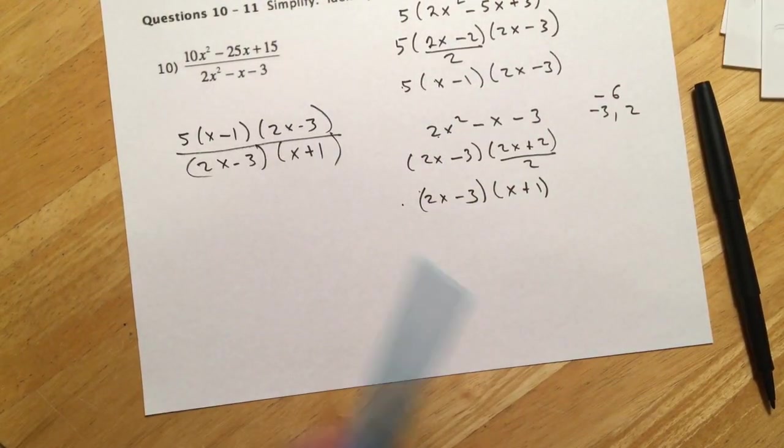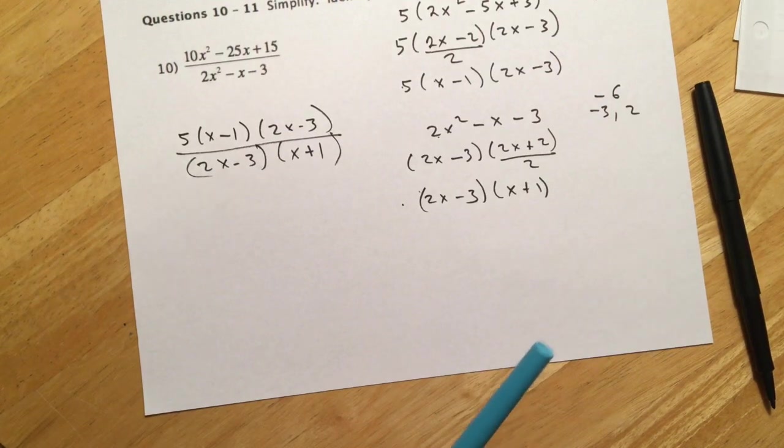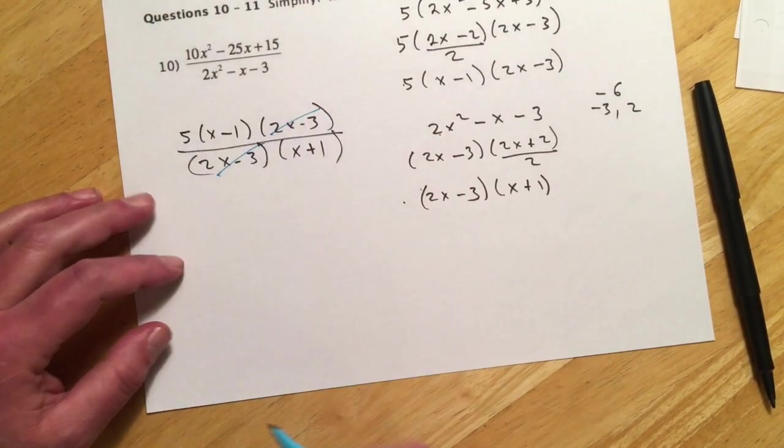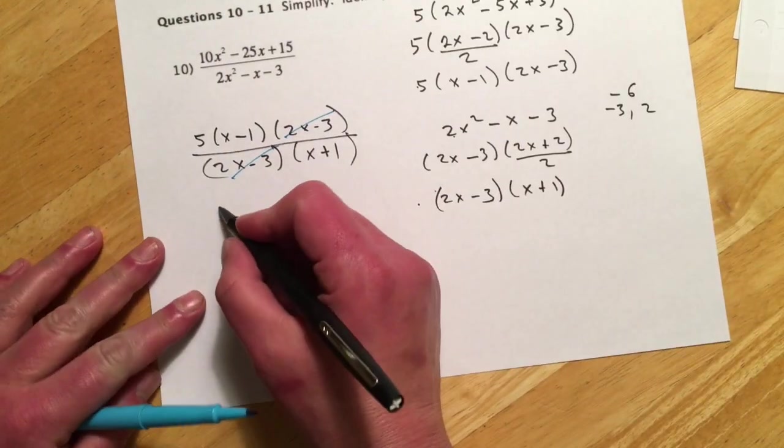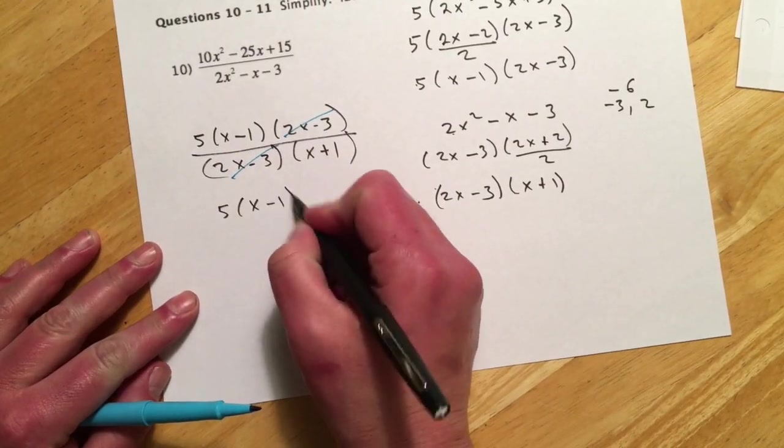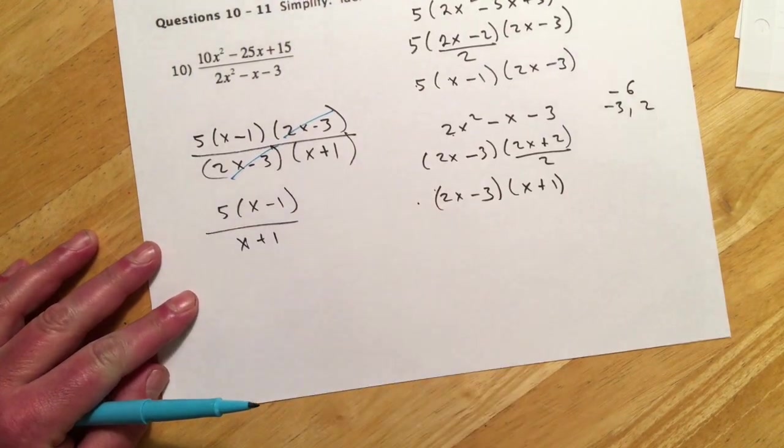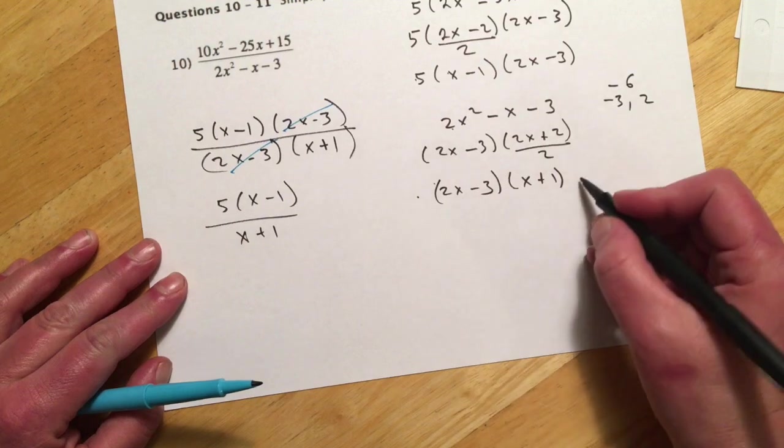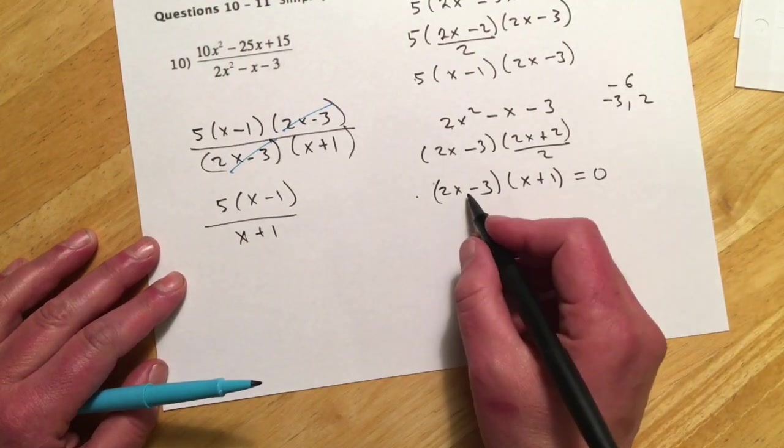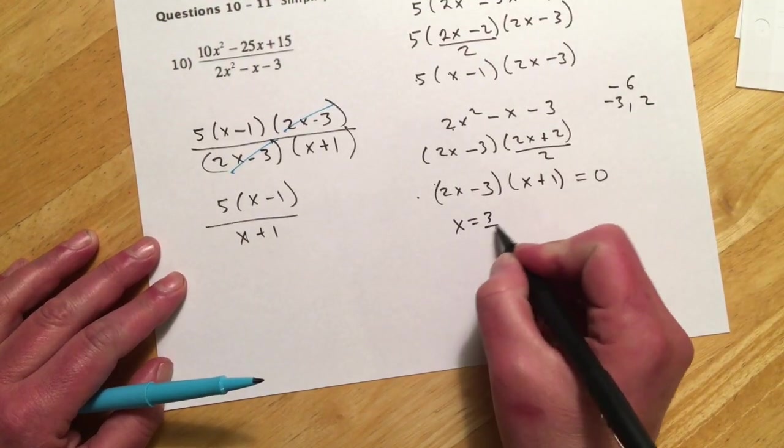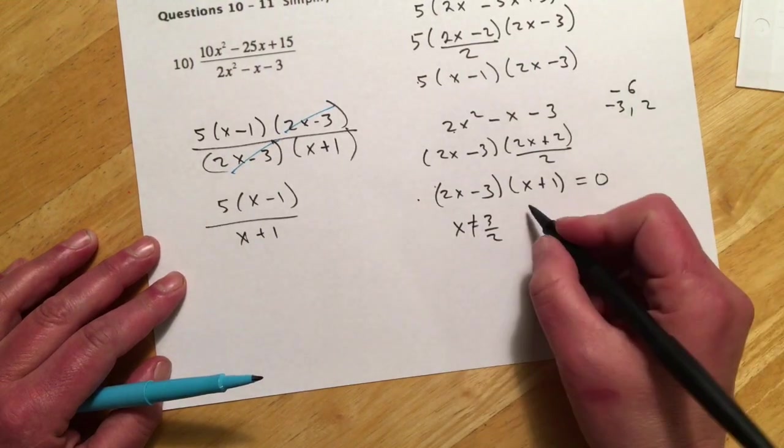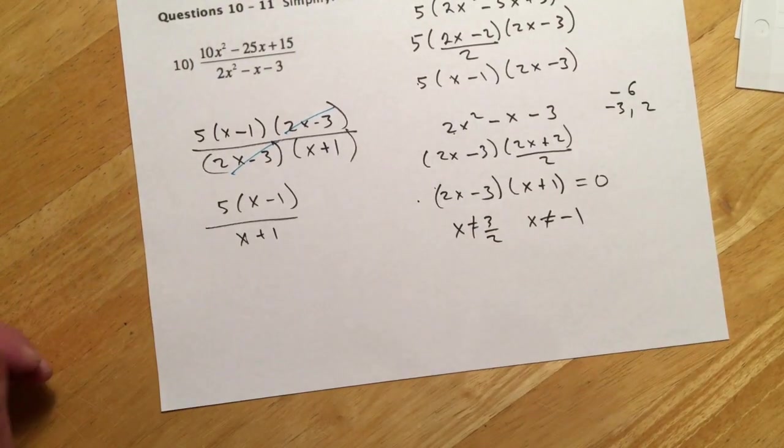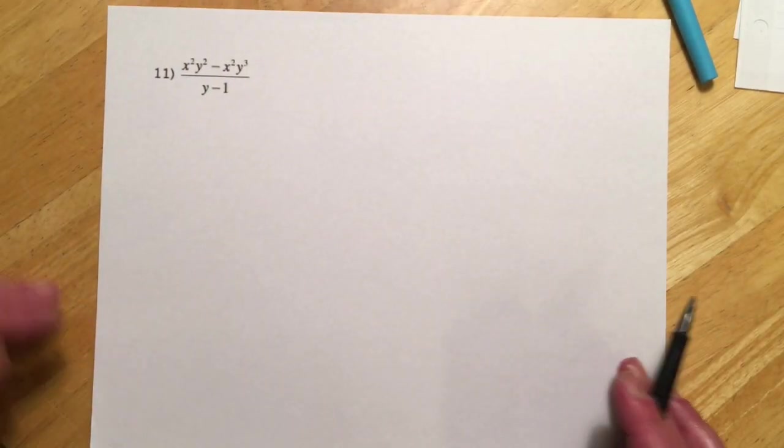And so once I have all that factored, now I can do my cancel step. And so we're going to cross out the 2x minus 3s. And then basically what's left is the answer. So 5, x minus 1, and x plus 1. And our restrictions would have come from this one. So if I think of setting that to 0, this side would be x equals 3 halves. Or it can't equal 3 halves because it's a restriction. And this would be x can't be negative 1.